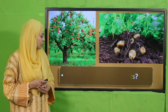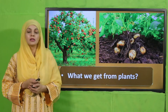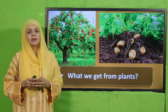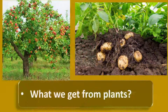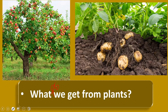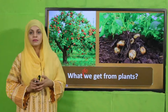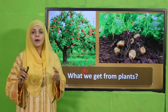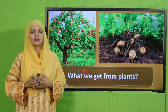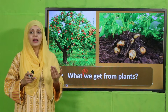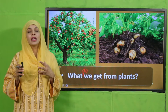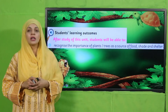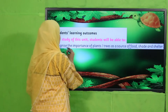Now is the time for activity. Look at the pictures very carefully and then answer the given questions. What do we get from plants? Fruits, vegetables — and they also provide us clean air. You know, we get oxygen from them. They also provide shade when it is hot. So we get a lot of things from plants.